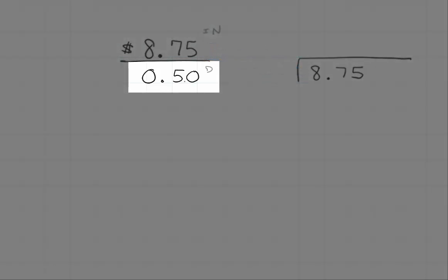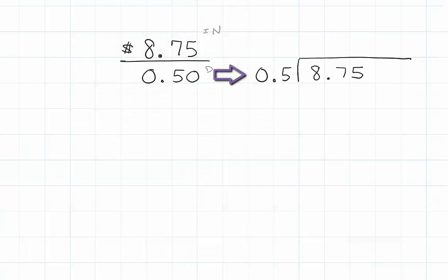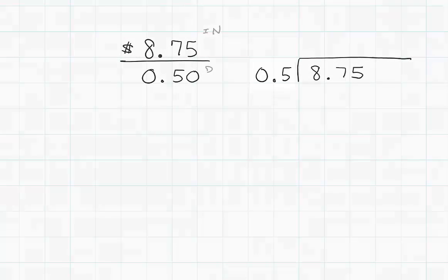0.5 is at the door. It's easier to divide when we have a whole number at the door. What we need to do is move the decimal place one place value in 0.5. If we move it one place value, it becomes just the number 5.